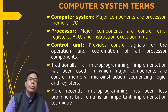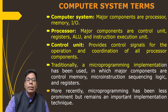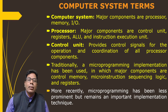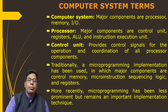The control unit provides control signals for the operation and coordination of all processor components — so for anything you want to do, the signals are provided by the control unit. For execution of instructions, a microprogramming implementation has been used, which includes control memory, macro instructions, sequencing logic, and registers, so that instructions are sequenced and executed one by one. More recently, microprogramming has been less prominent, but remains an important implementation technique, which is why we will study microprogramming in detail later in the subject.